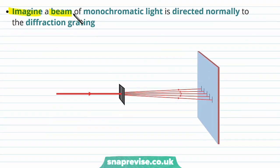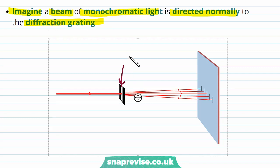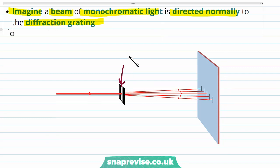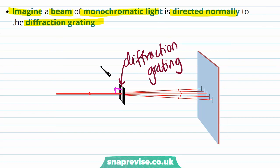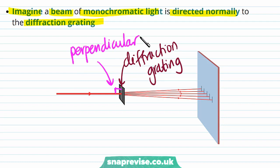Imagine a beam of monochromatic light is directed normally to the diffraction grating. This is our diffraction grating, made up of lots of very tiny slits. We can see that the light is directed at it perpendicularly — at a right angle — and then we can see what pattern this produces on a screen.